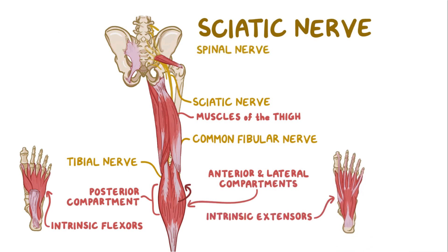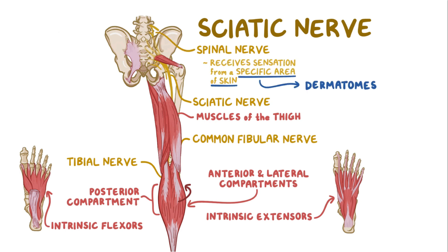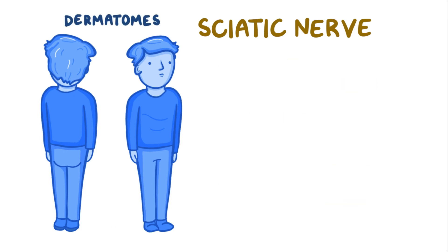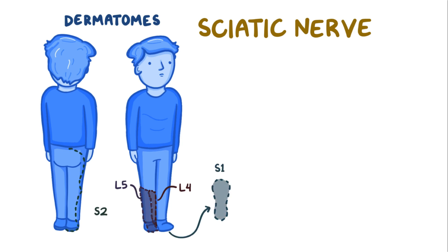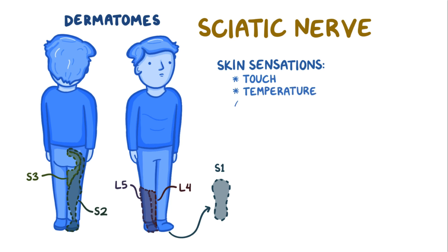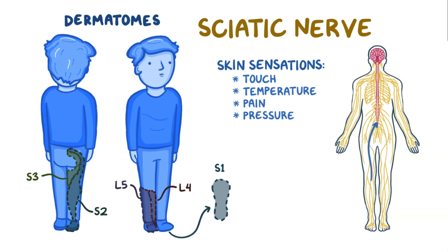Each spinal nerve is in charge of the sensation of a specific area of the skin, called a dermatome. Dermatomes of the spinal nerves of the sacral plexus cover almost the entire surface of the thigh, leg, and foot. L4 covers the medial side of the leg, L5 covers the lateral side, S1 covers part of the dorsum and the entire sole of the foot, S2 covers the back of the leg, while S3 covers the back of the thigh. Skin sensations like touch, temperature, pain, and pressure are carried to the spinal cord and then to the brain where we register the sensations.